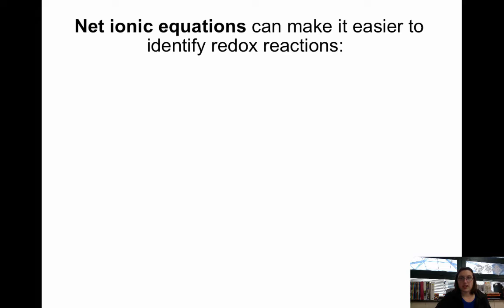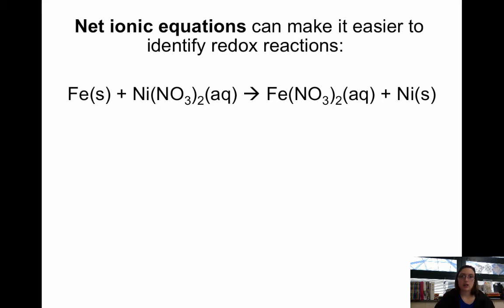Now net ionic equations make it easier to identify if you actually have a redox reaction happening. This is why AP always requires you to do net ionic equations, because this allows you to actually look and say, oh yeah, those oxidation numbers are changing, this must be a redox reaction.